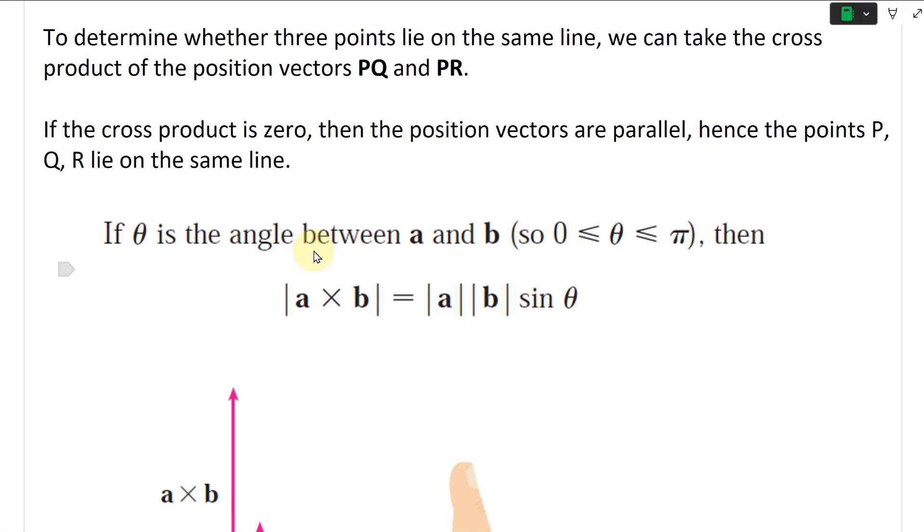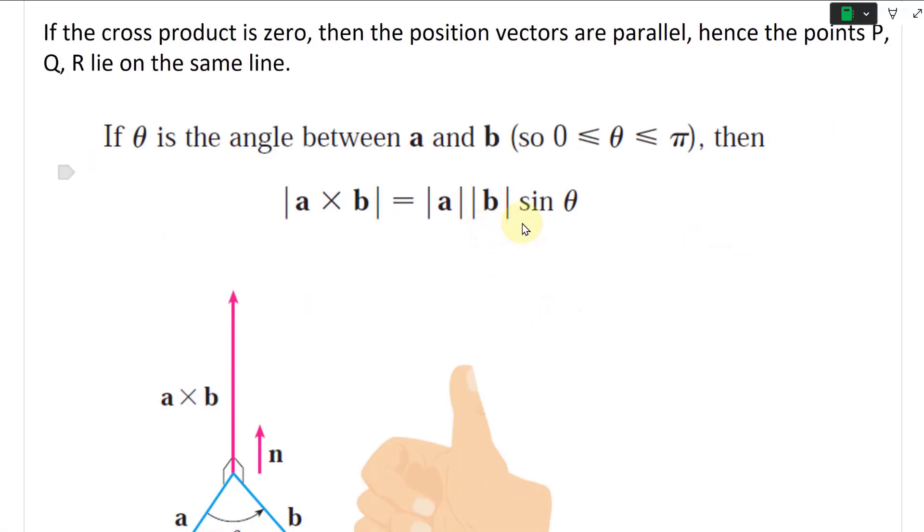So if the angle theta between A and B, if theta is the angle between A and B, where theta is between pi and zero, then the length of the cross product A cross B is equal to length A times length B times sine theta.